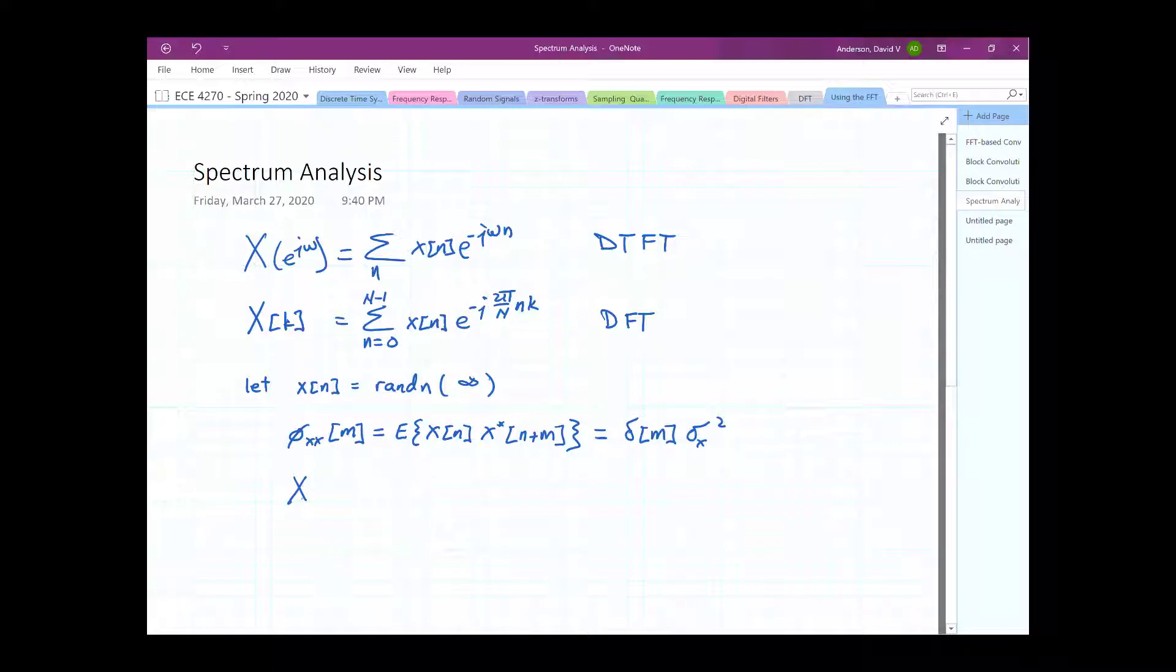And this is just going to be delta of m times the variance of m. Because we're zero mean, we don't have any of that to worry about. So there we go. And so, we can find the power spectral density as the sum over all time, delta m, sigma x squared, e negative j, omega m. Well, everything goes away from that sum, except for the single term when m is equal to zero. And so, we just get a constant. So, if we were to plot omega here, the PSD is just going to be a constant as sigma x squared.